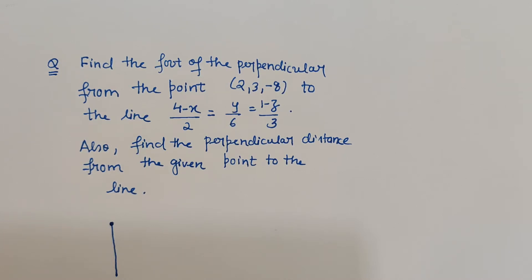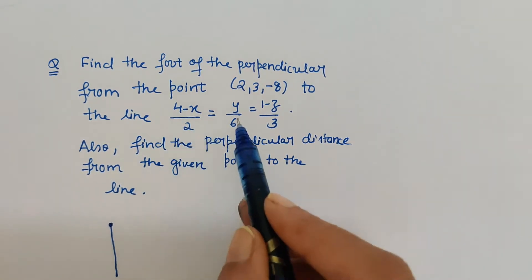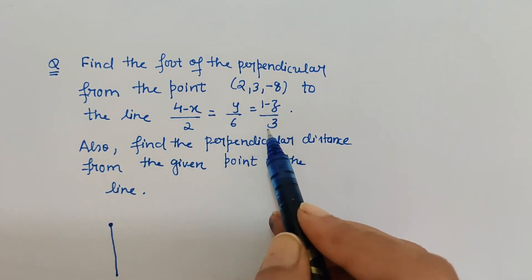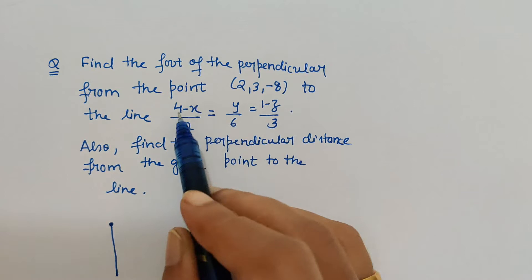Hello friends, in this video I am going to explain one important problem of Class 12 where we have to find the foot of the perpendicular from the point (2, 3, -8) to the line (4 - x)/2 = y/6 = (1 - z)/3. For this, first we have to write this equation of line in standard form.